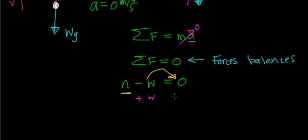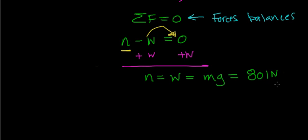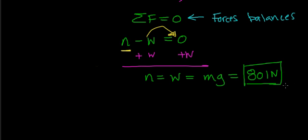Adding w to both sides, the normal force equals the weight, which equals mass times gravity — or 801 Newtons, which we also worked out to be 180 pounds. So when you're in an elevator traveling at constant velocity, your weight force returns to your normal gravitational weight. You would not be able to tell the difference in terms of weight whether you were moving at constant velocity in an elevator or just standing on a scale in your own bathroom. In this special case, when moving at constant velocity, there is no net force acting on you.